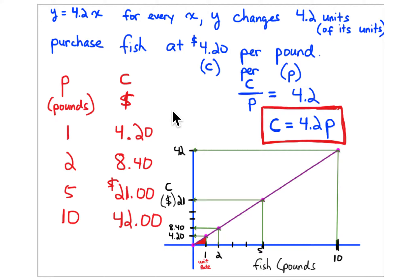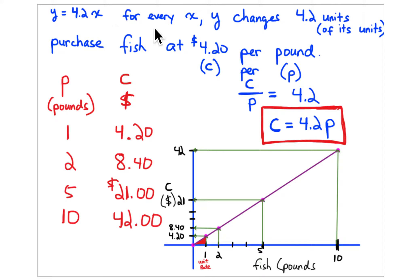The first thing to notice is that the equation y = 4.2x is a proportional relationship. That means the graph for this situation will go through the origin (0, 0). The unit rate is right there in the equation — look for that as we go through the problem.